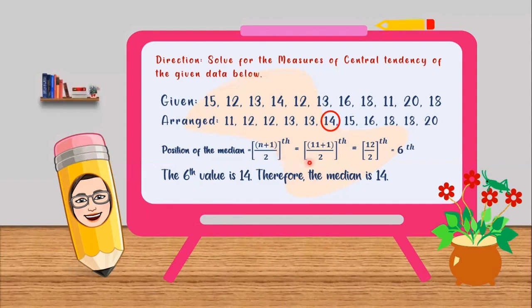Moving forward, we have the quantity of 11 plus 1 all over 2, which is equal to 12 over 2, and that is 6. So we need to find the sixth value. First, second, third, fourth, fifth, and sixth. Therefore, our median value is 14.